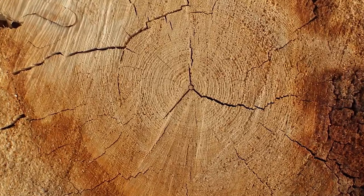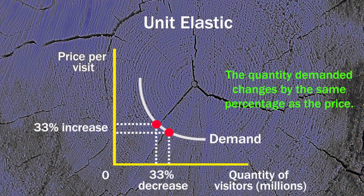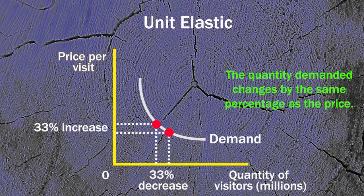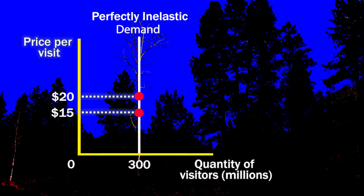An entire demand curve can be unit elastic if it is curved such that a change in price by any percentage causes the quantity to change by the same percentage. A perfectly inelastic demand curve is vertical, showing that the same quantity will be purchased at any price.